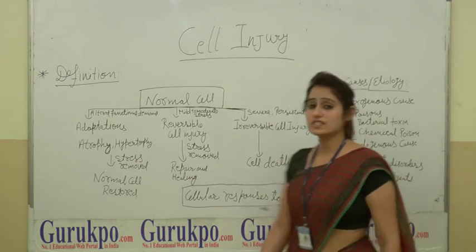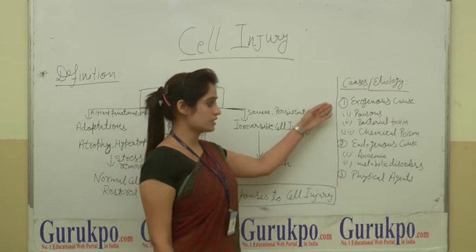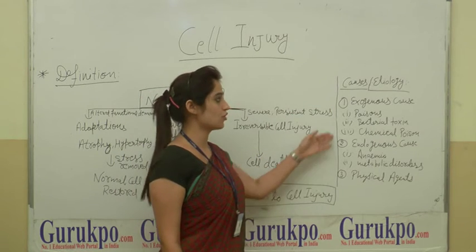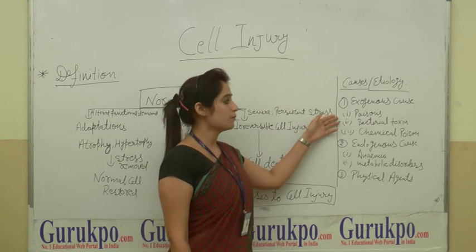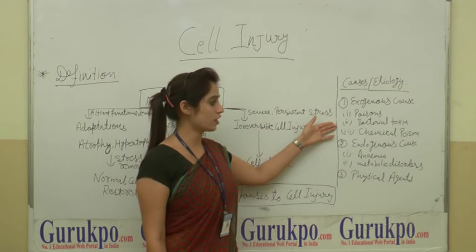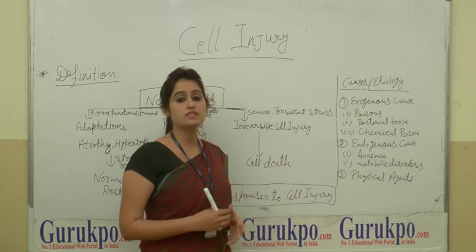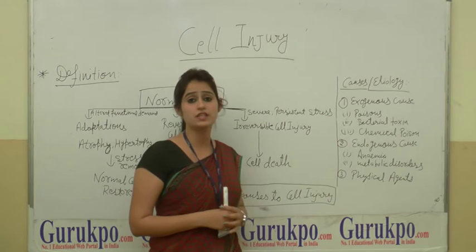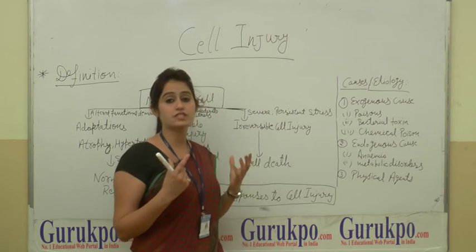Now we will see the causes of cellular injury: Exogenous Cause, Endogenous Cause, and Physical Agents. First, Exogenous Cause — Poison, Bacterial Toxin, Chemical Poison, and Anoxia. Anoxia is the main cause of cellular injury; it means the lack of oxygen supply.